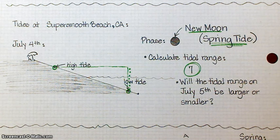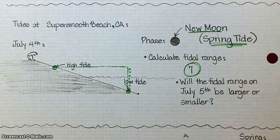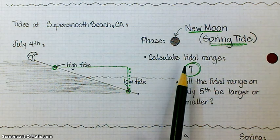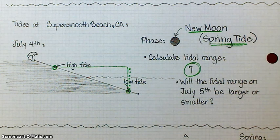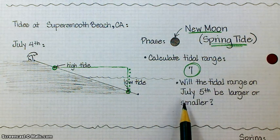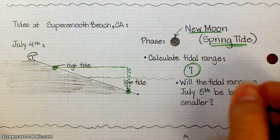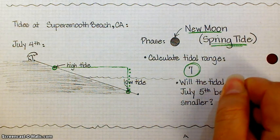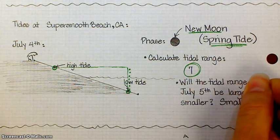Question: will the tidal range on July 5th be larger or smaller than the one for this day? Smaller, why? Yeah, your new moon, your spring tides are your biggest tidal ranges, so this is going to be your maximum tidal range. So the day after it's going to be smaller. Does that make sense to you guys? Because your spring tides is your biggest tidal range and that's happening on this 4th of July, so the day after your tidal range is going to be a little smaller.